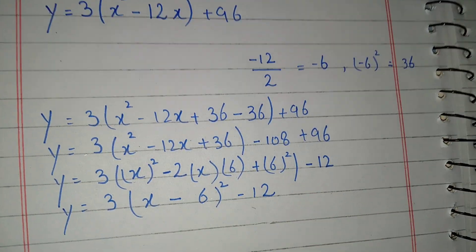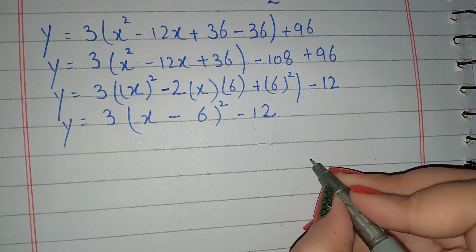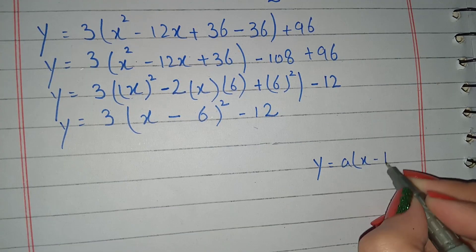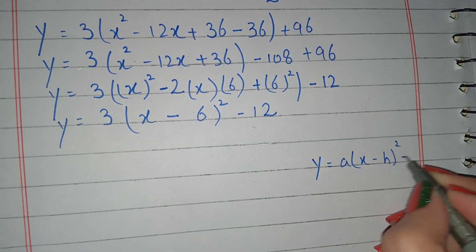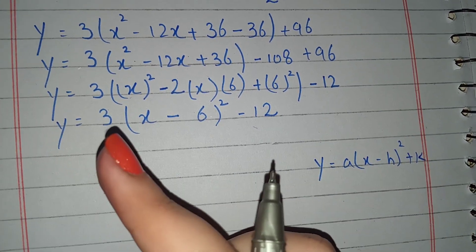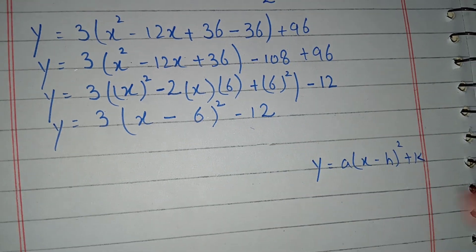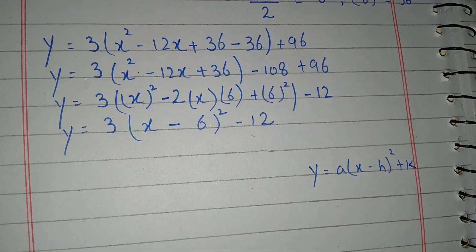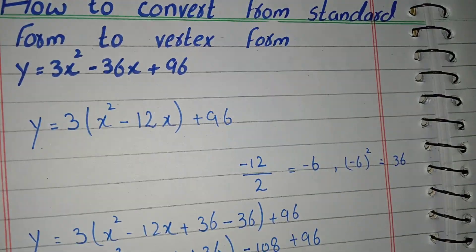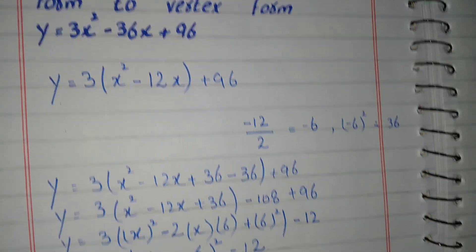So this is your required vertex form. Vertex form is y equals a times (x minus h) squared plus k. Compare it with our result: this is your a, this is your h, and this is your k. This is the required vertex form, and in this way we convert from standard form to vertex form.